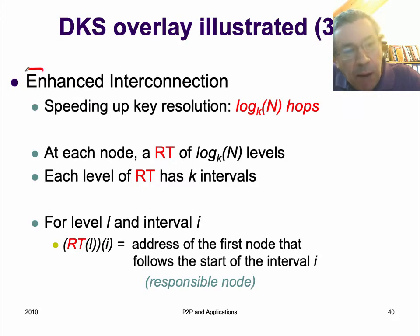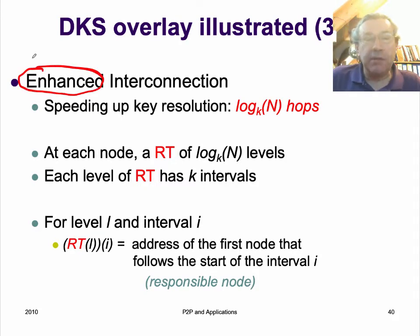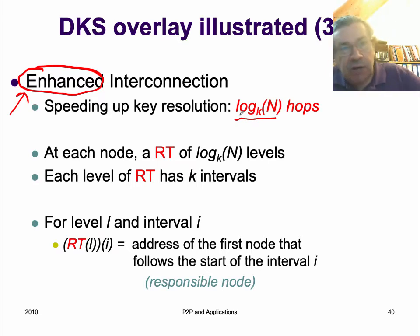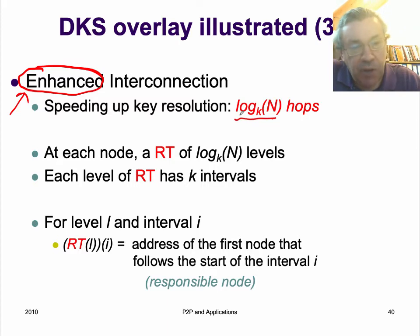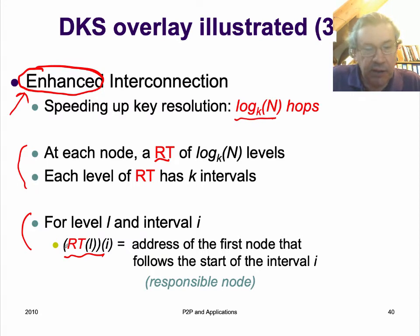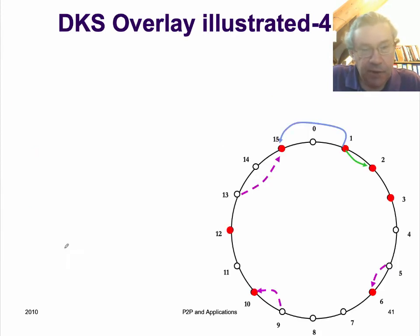On top of the basic interconnection — predecessor and successor — we build routing tables, called the enhanced interconnection. This gives a logarithmic number of hops. The basic interconnection is linear; the routing table optimization enables jumping far away, giving logarithmic performance. At each node, there's a routing table RT with log-k(N) levels, and we define a function RT of l of i — at level l, interval i inside that particular level.